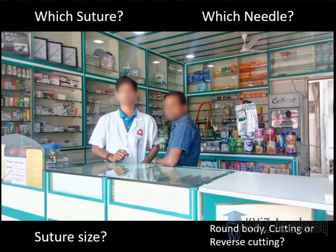We have answered three questions: which suture, suture size, and which needle. Now we come to the last question — round body, cutting, or reverse cutting.